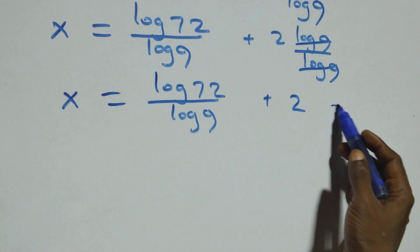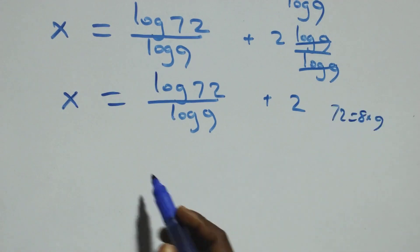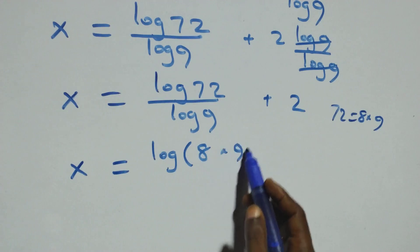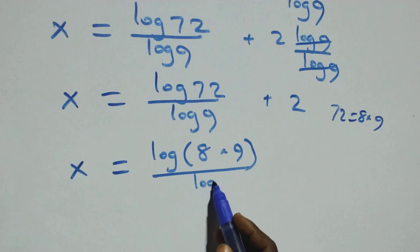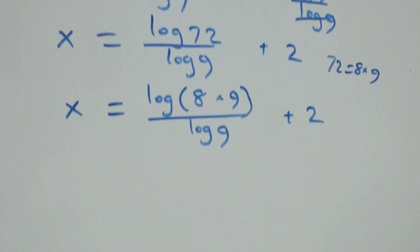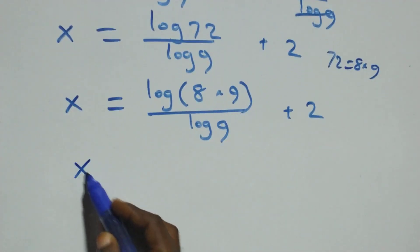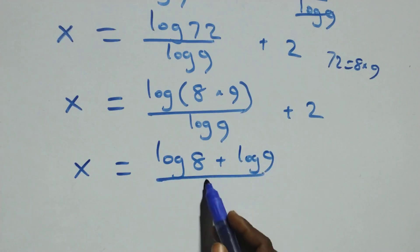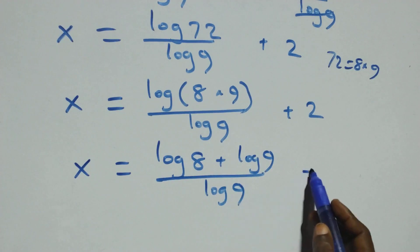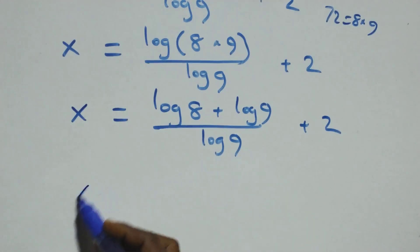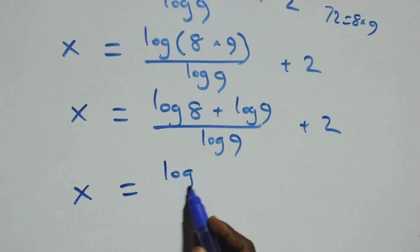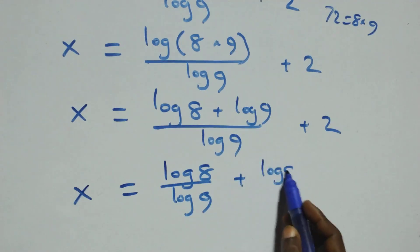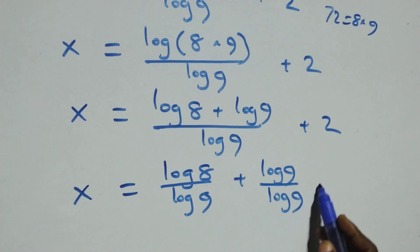We can also rewrite 72 as 8 times 9. So x equals log(8 times 9) over log 9 plus 2. Applying the product rule, this becomes x equals log 8 plus log 9, all over log 9, plus 2. Separating into two fractions: x equals log 8 over log 9 plus log 9 over log 9 plus 2.